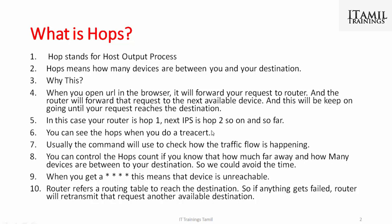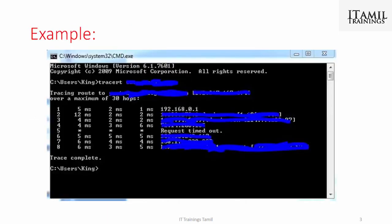If you type 'traceroute' followed by a space and then the IP address or host name and press Enter, you can see the first path in the example. This is a system where you can trace the route.